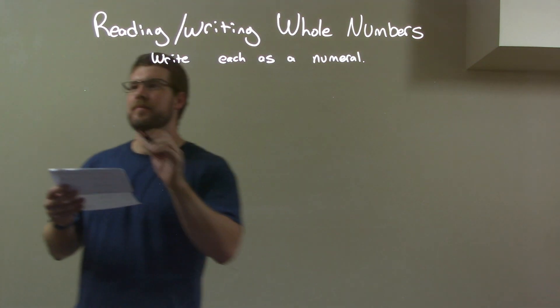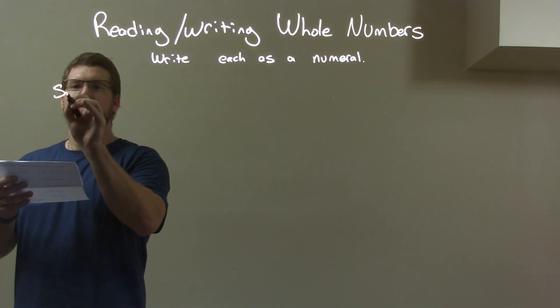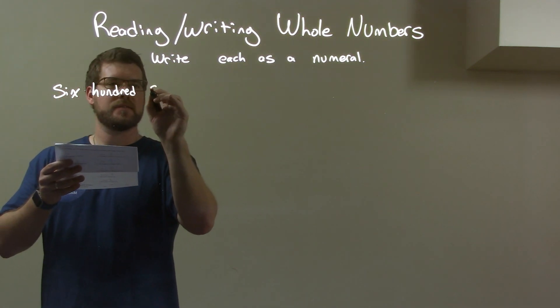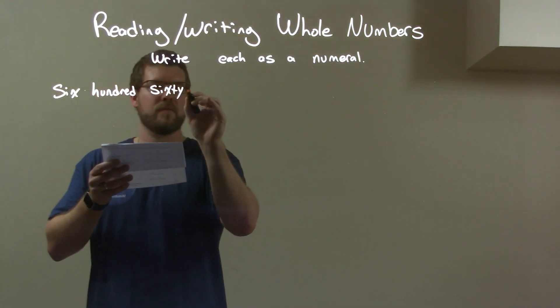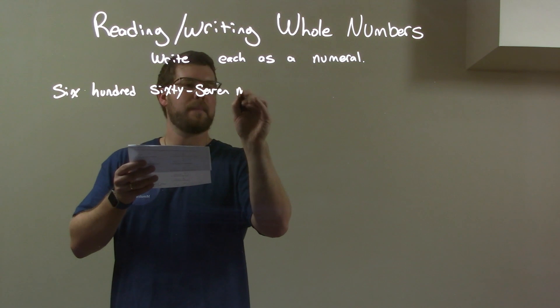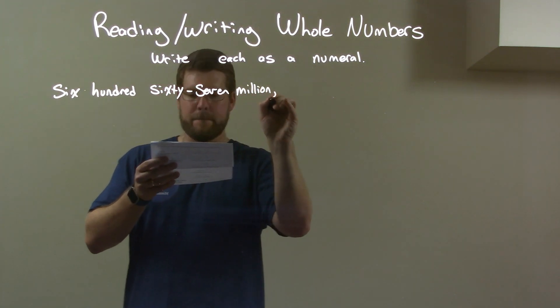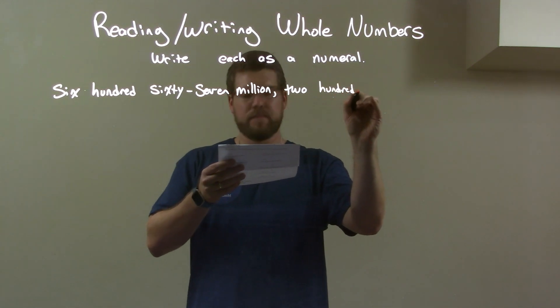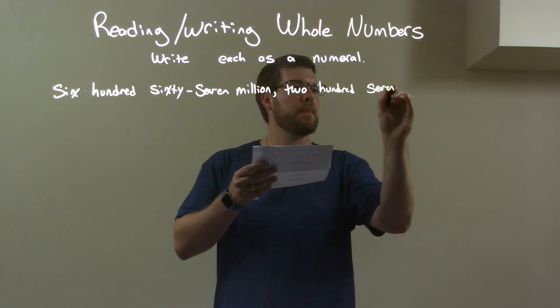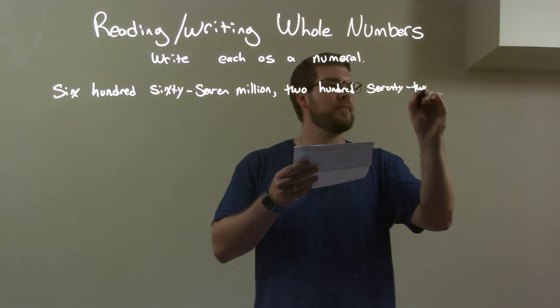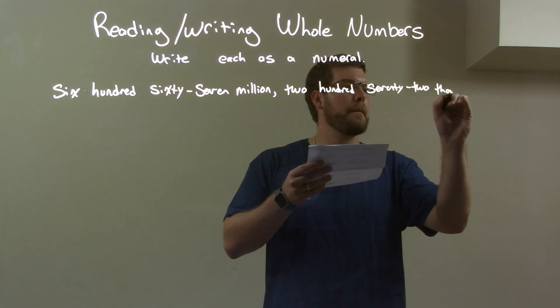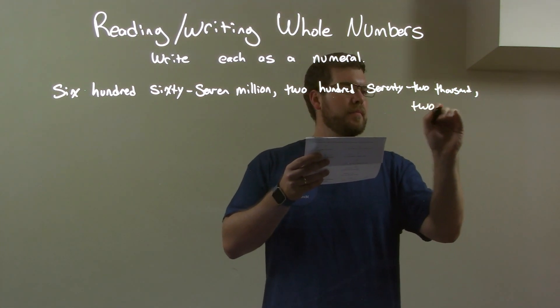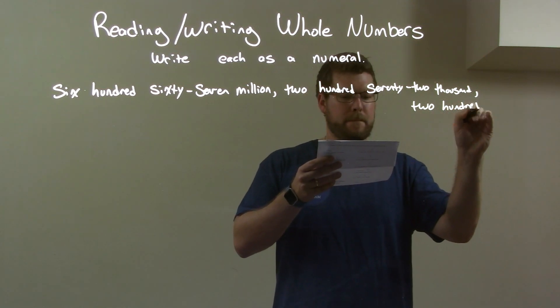So, if I was given this number: six hundred sixty-seven million, two hundred seventy-two thousand, two hundred seventy.